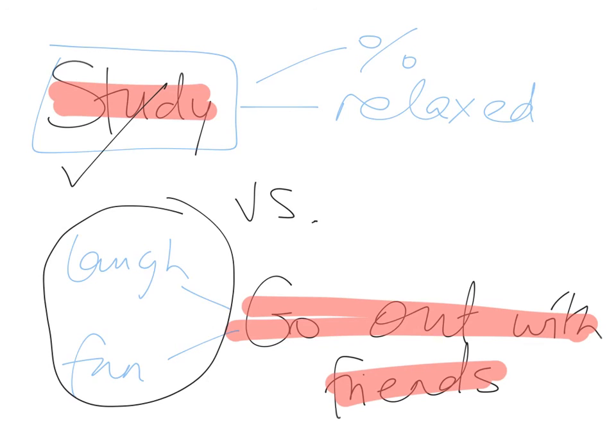It's not the decision that you give up itself, it's the benefits that that decision would have brought. So the laughter and the fun and the time I had with my friends is what I give up if I choose to stay at home and study. That is what economists would say is your opportunity cost.